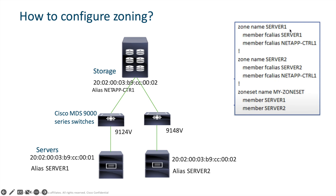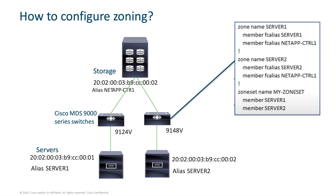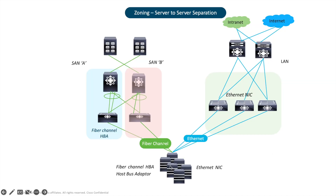My first zone name is Server One, and in it I put Server One and NetApp Controller storage system. Then the same for Server Two, making both servers able to connect to the same storage system on the same WWPN. Then I configure my zone set where I group both servers. Typically with Fiber Channel, if you configure this on one switch the configuration will be automatically replicated on the other MDS switches as well. With zoning done this way, servers can connect to storage but not to each other. However, at this point both servers get access to everything on the storage system.